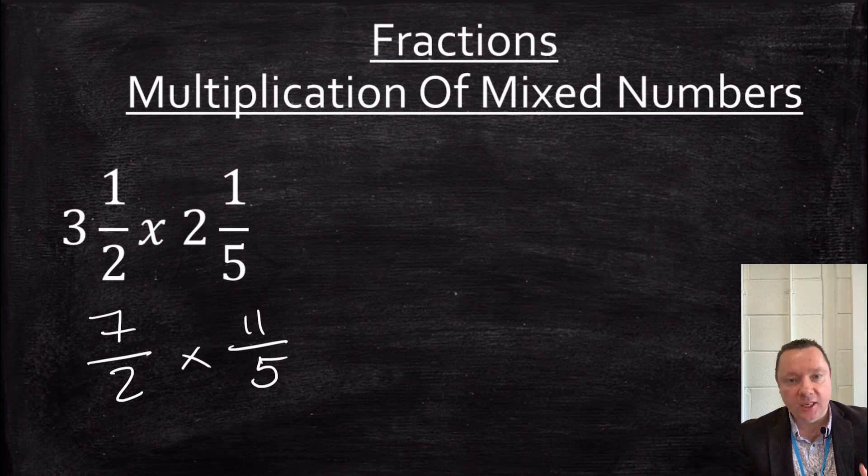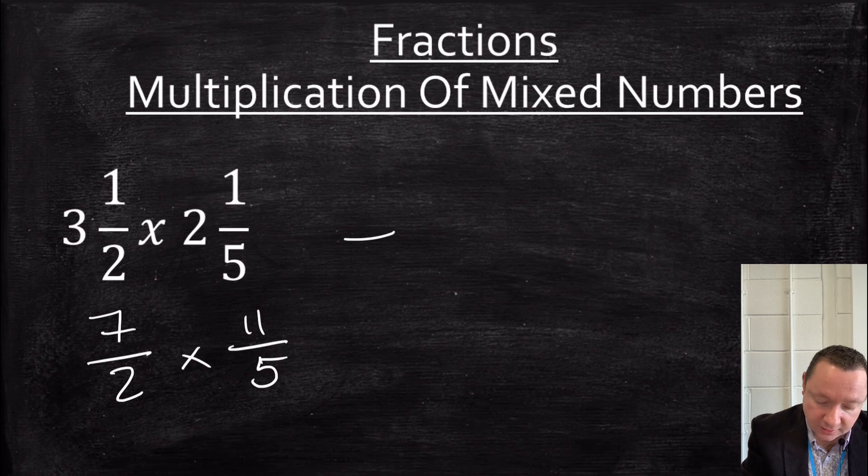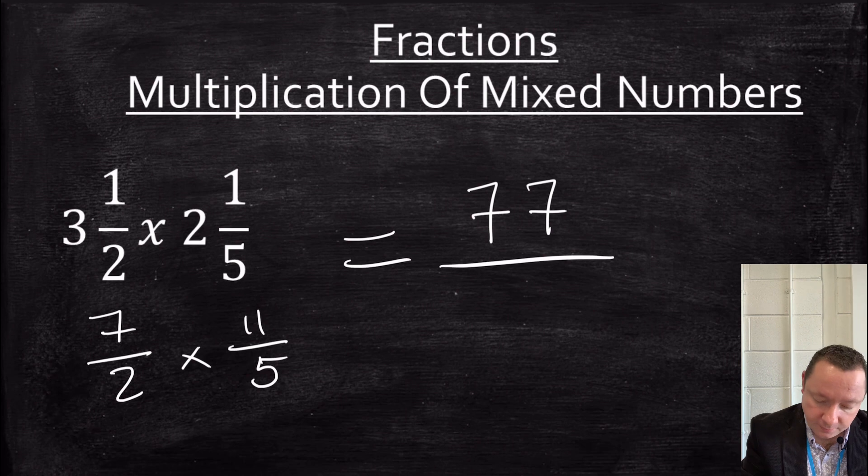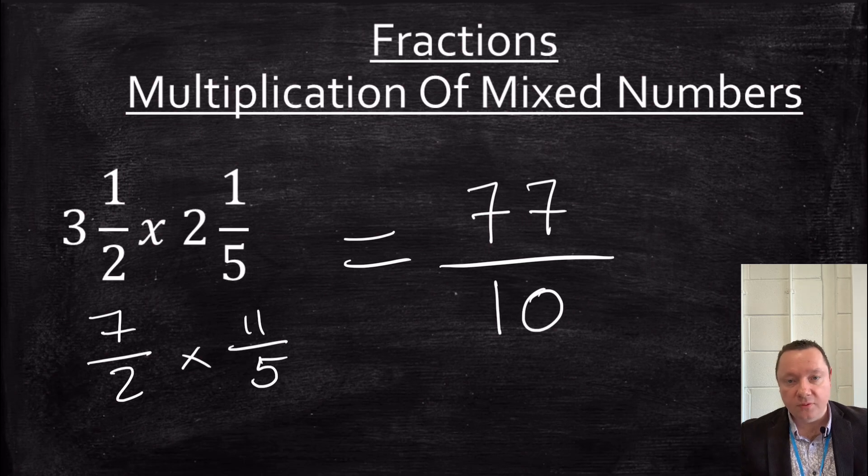If you can simplify at this stage, you can or wait to the end. So I'm just going to times 7. Times 11 is 77. Over 2 times 5 is 10. And at this stage, you can either simplify your answer and leave it as an improper fraction, or you can change it back to a mixed number.